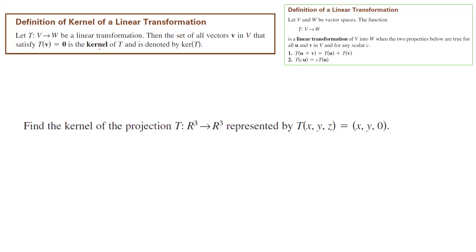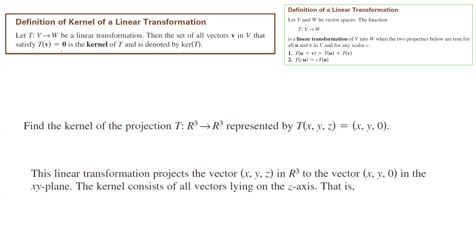Remember the definition of kernel. The kernel of T is the set of all values, vectors in the domain such that T becomes zero. So let us begin. Kernel of T is vectors of form (0, 0, z). z is not important. Why is that?